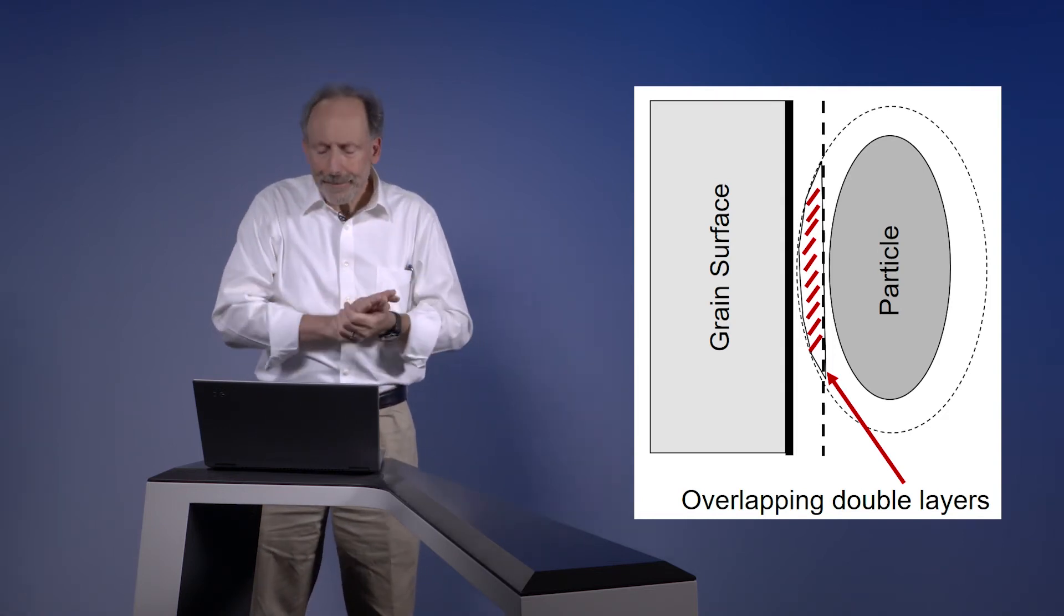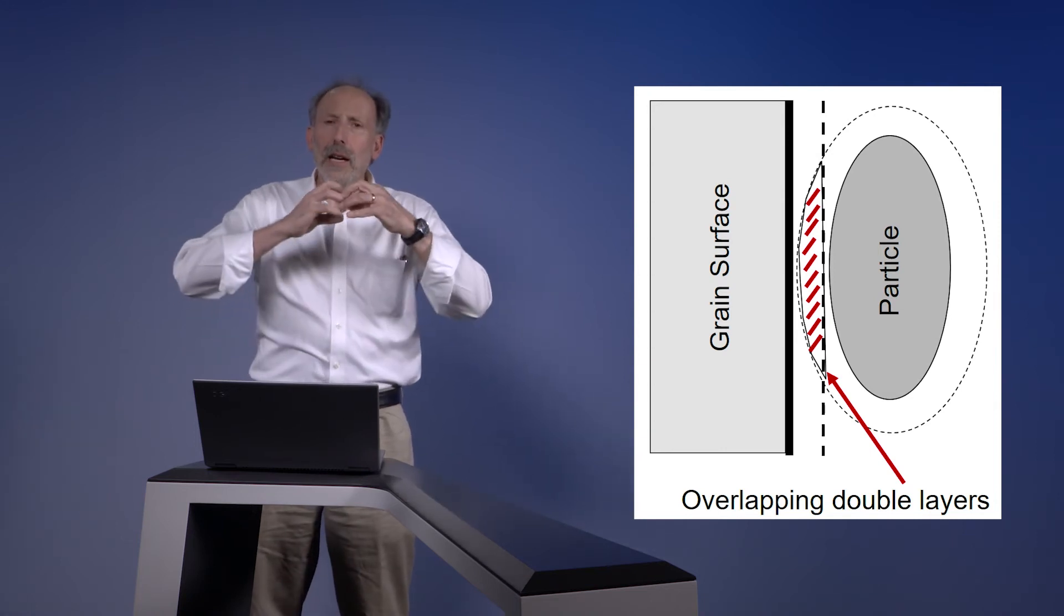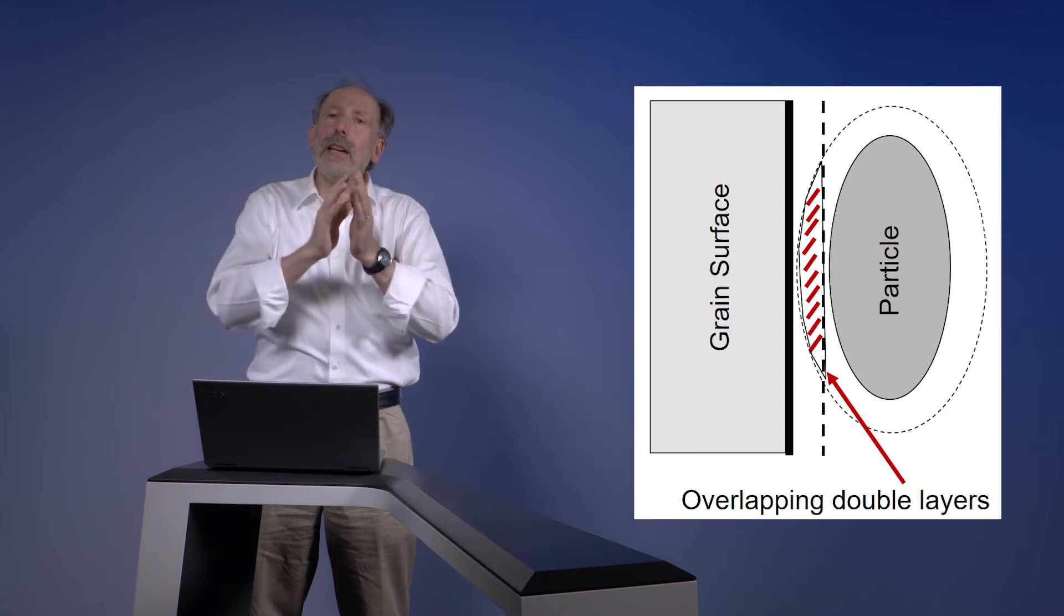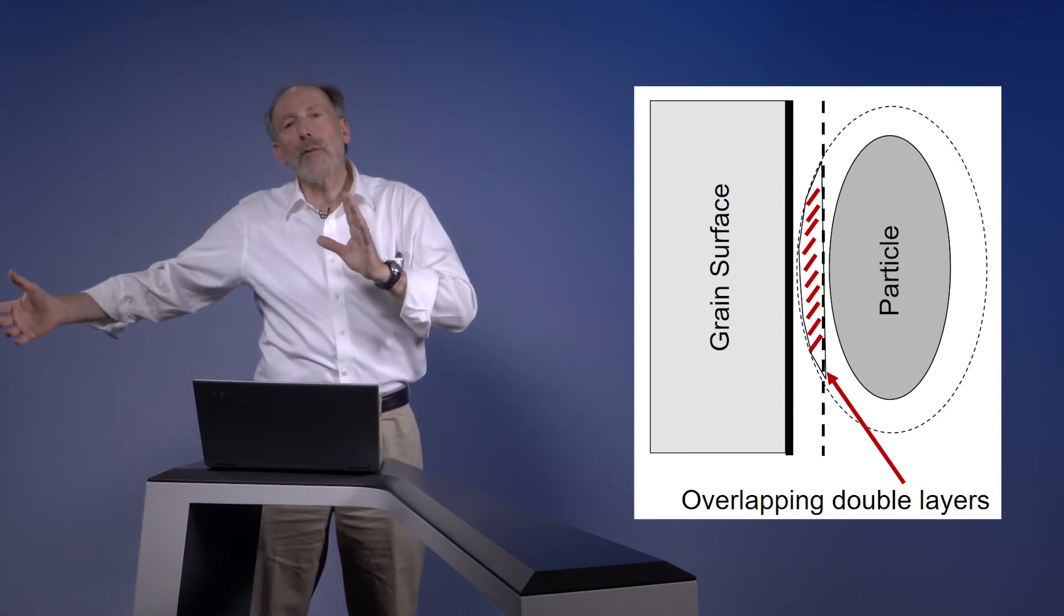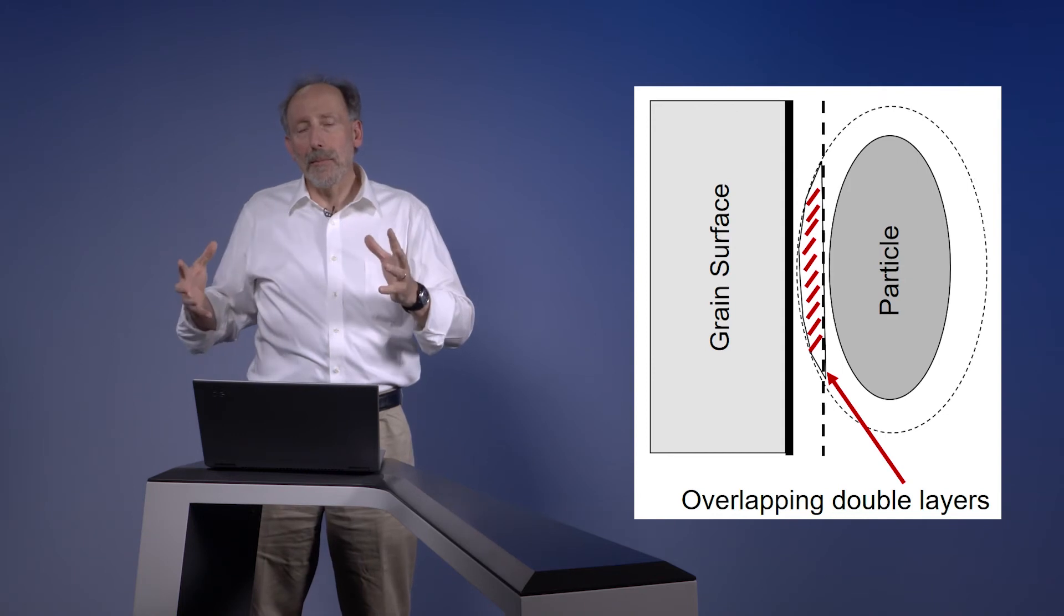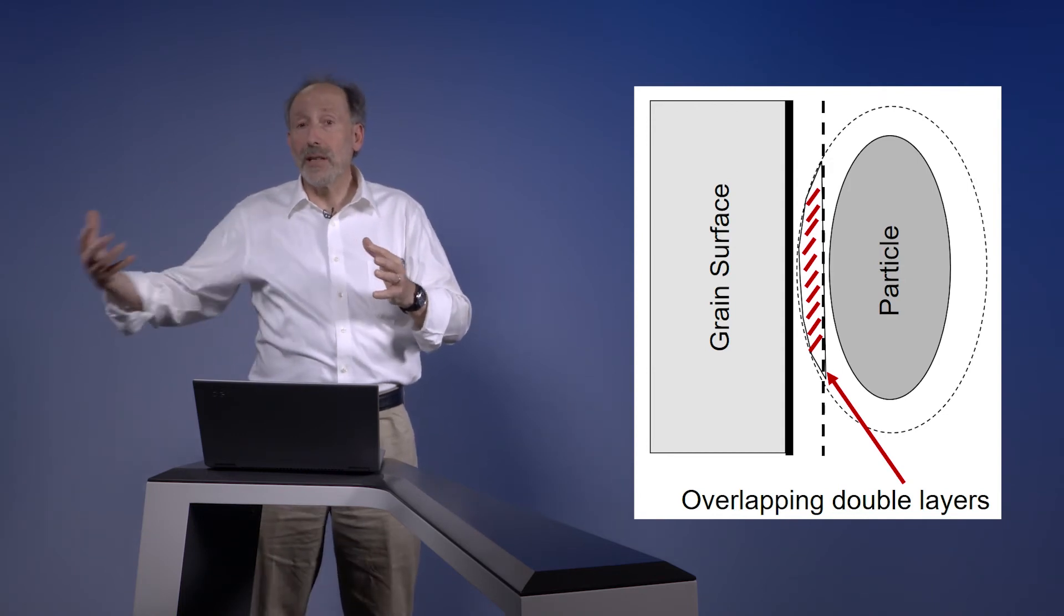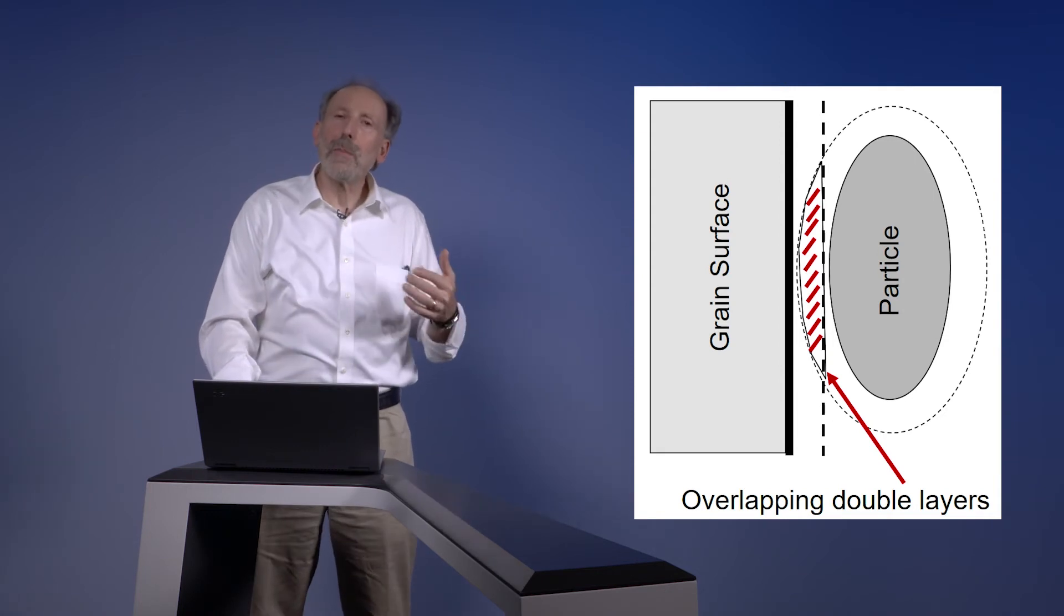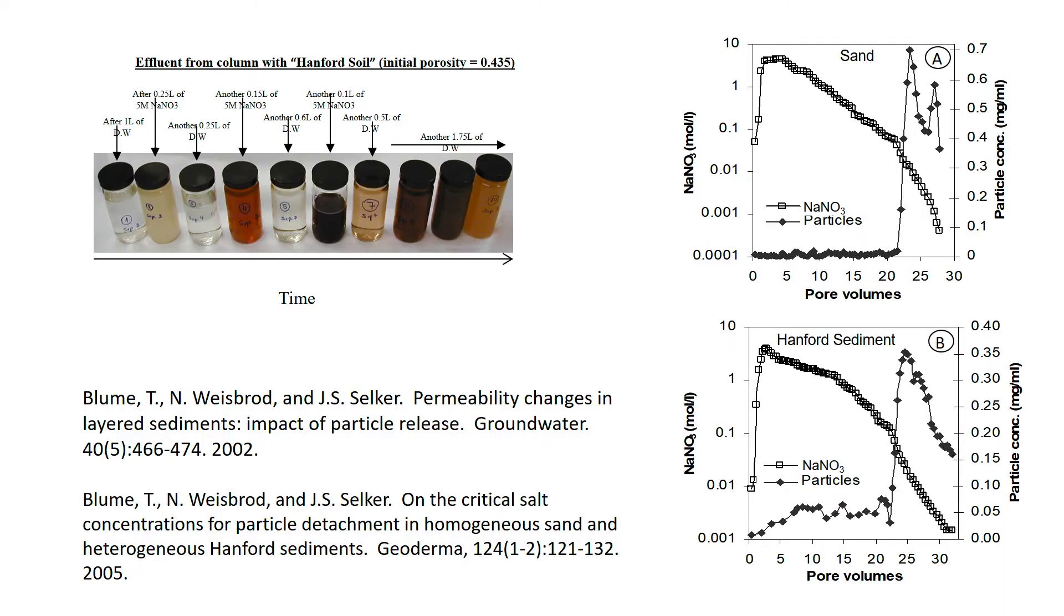Now what can happen is if we have those cations hydrate, then we can get these particles far enough away where the cohesive forces are no longer strong enough to hold the colloid in place and it will become mobilized. We can mobilize colloids by changing the chemistry of the water surrounding the colloid.